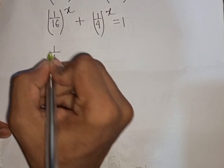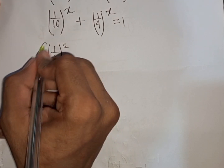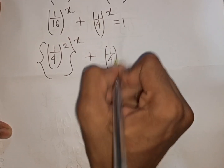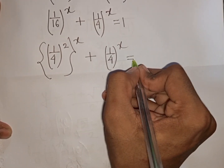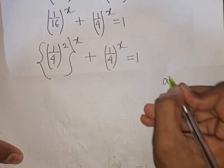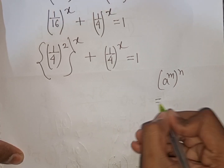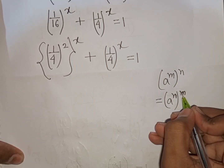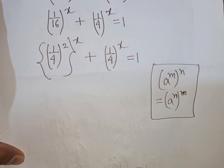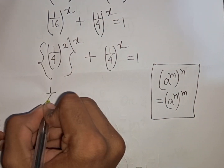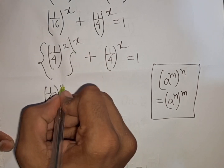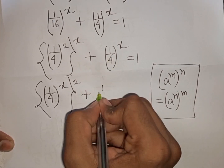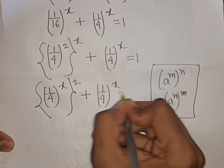We can rewrite 1/16 as (1/4)^2. So the first term becomes (1/4)^2 raised to the power x, giving us (1/4)^(2x) + (1/4)^x = 1.